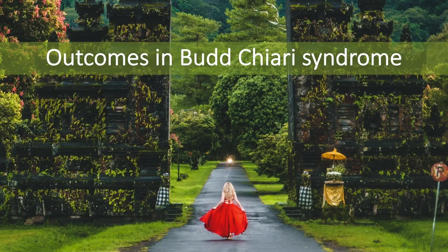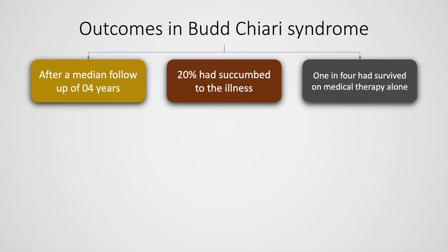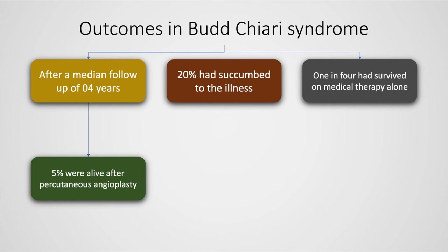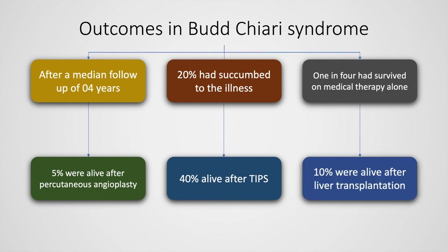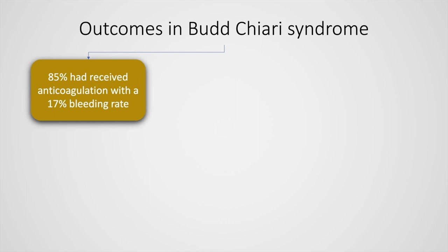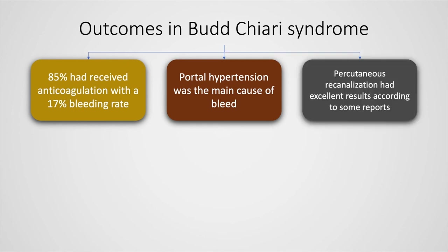Let's discuss the outcomes in Budd-Chiari syndrome. After a median follow-up of 4 years, 20% had succumbed to the illness and 1 in 4 had survived on medical therapy alone. 5% were alive after percutaneous angioplasty, 40% were alive because of the TIPS procedure, and 10% were alive after liver transplantation. 85% had received anticoagulation with a 17% bleeding rate. Portal hypertension was the main cause of bleed, and percutaneous recanalization had excellent results according to some reports.